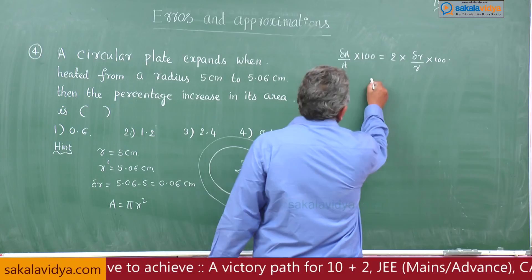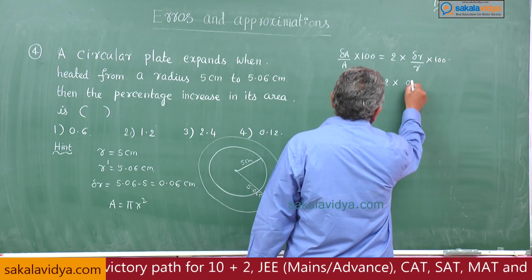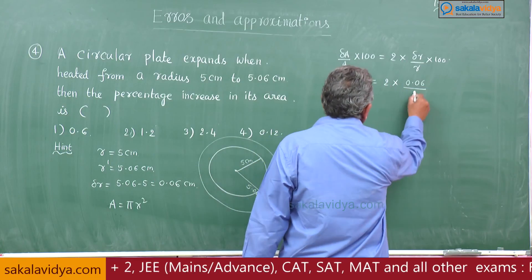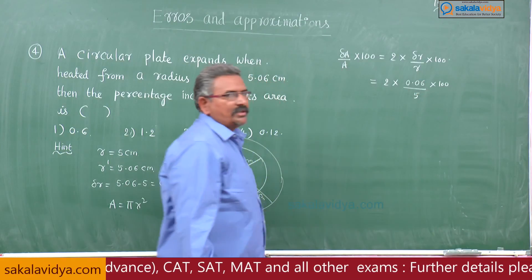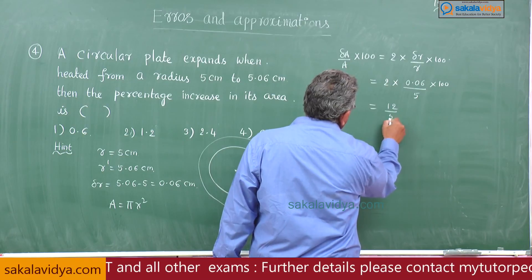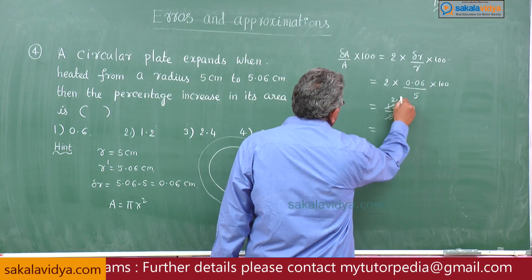Here 2 times delta r is equal to 0.06 by r value is 5 into 100. 0.06 into 100 is 6 only, that is 12 by 5. 5, 1, 5, 2, 10, 2.4.